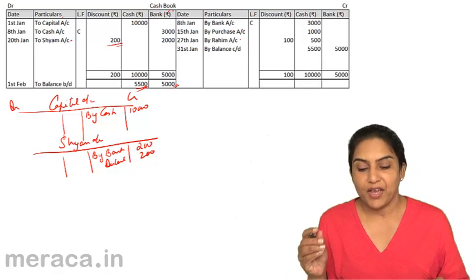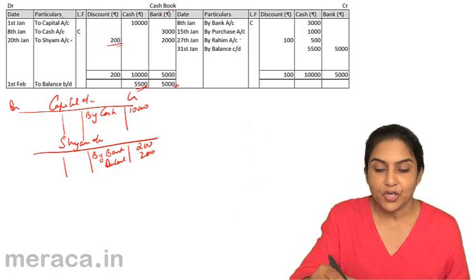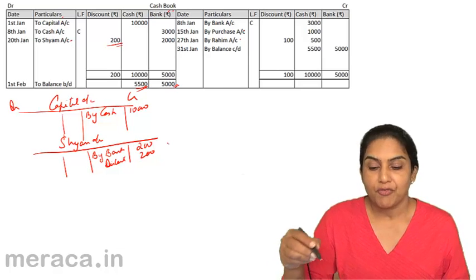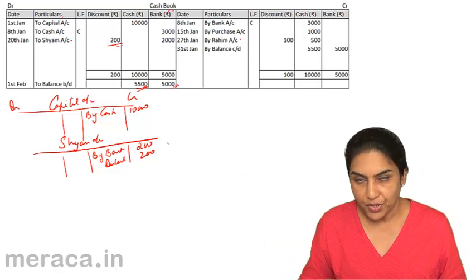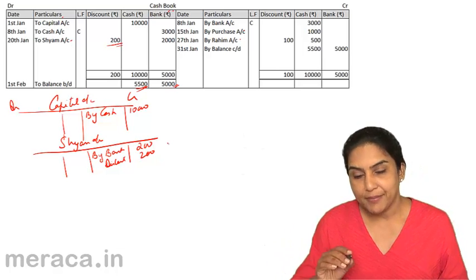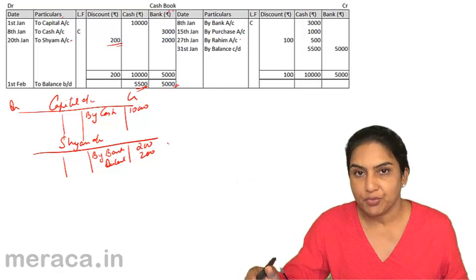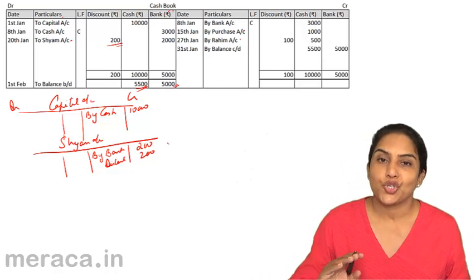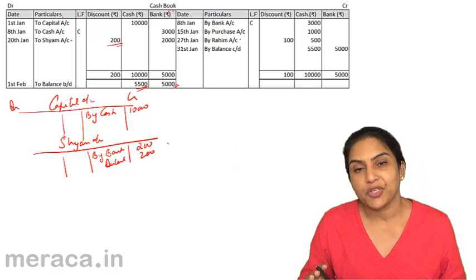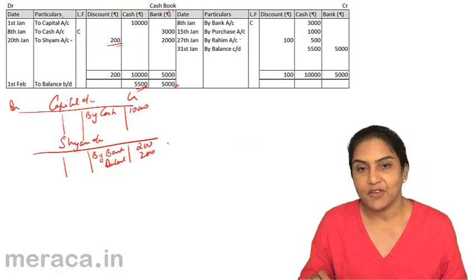Just like we post to the credit of corresponding accounts from the debit side of the cash book, similarly when we go to the credit side of the cash book and post, we will post it to the debit side of the respective accounts.